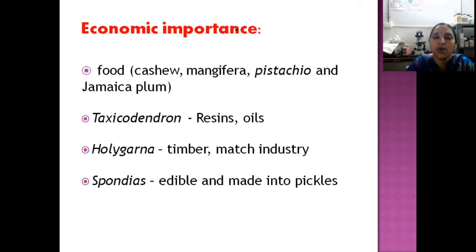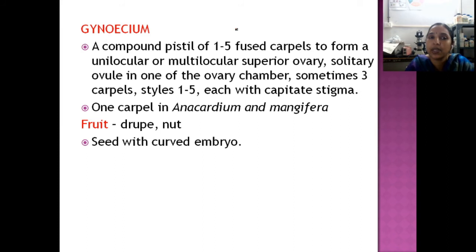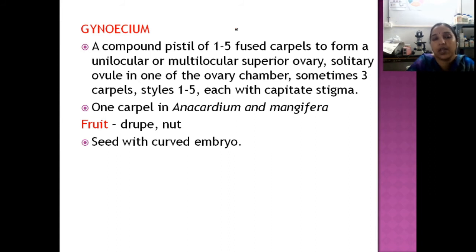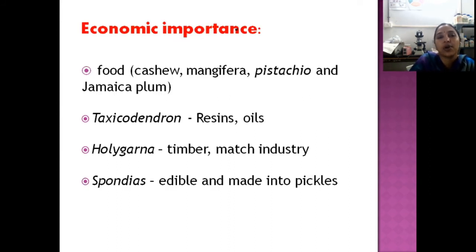In summary, the key floral characters to remember are: the nature of the corolla, the presence of the disc, the staminodes, the nut as the fruit, and the unilocular condition seen in Anacardium and Mangifera.